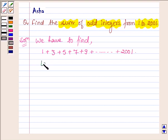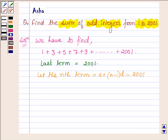The last term is 2001 of this series, and the last term or the nth term is equal to a plus n minus 1 into d equals 2001, where